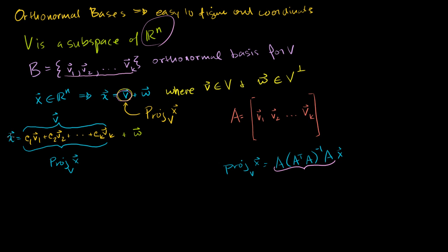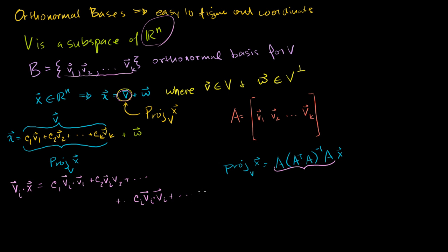What happens if we take both sides of this equation and dot it with some basis vector Vi? If I take Vi dot x, where Vi is the ith basis vector in the basis for my subspace V, I'm going to get C1 times Vi dot V1, plus C2 times Vi dot V2, and eventually the ith term Ci times Vi dot Vi, and eventually Ck times Vi dot Vk. We also have the w term, so we add Vi dot w.